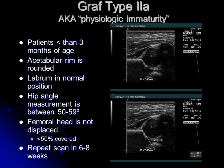The next most common hip I see is Graf type 2A, also known as physiologic immaturity. This is just mildly abnormal, but the child should be less than three months of age. The acetabulum is more rounded as opposed to the sharp contour on a normal study, the labrum is still in normal position, but the alpha angle is low — between 50 and 59 degrees — and the femoral head is less than 50% covered but not displaced out of the acetabulum. We'll just repeat the scan in six to eight weeks, and oftentimes it's normal at follow-up.